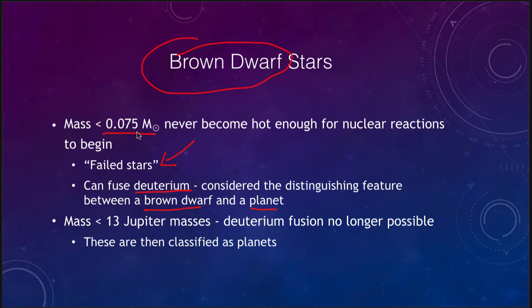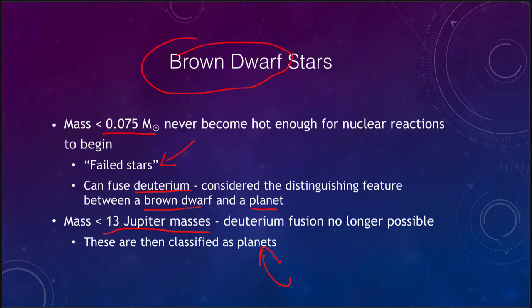Anything greater than 0.075 solar masses is classified as a star. Anything between 0.075 solar masses and about 13 Jupiter masses is classified as a brown dwarf. Anything less than about 13 times the mass of Jupiter is classified as a planet. So sometimes we consider Jupiter as almost a star — it's not even close. We would need 13 Jupiters just to get into the brown dwarf stage, and many more to reach star status.